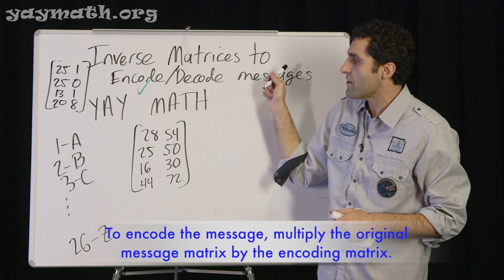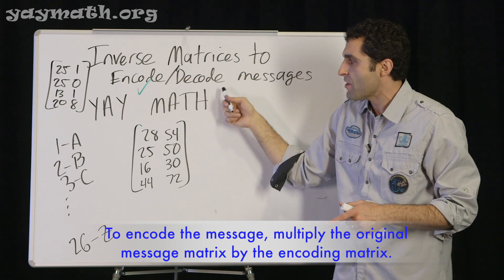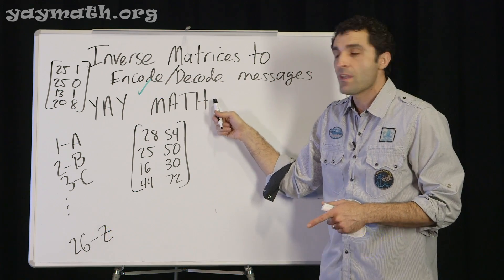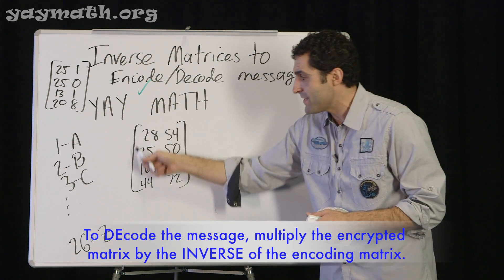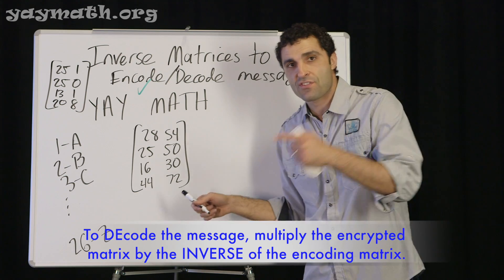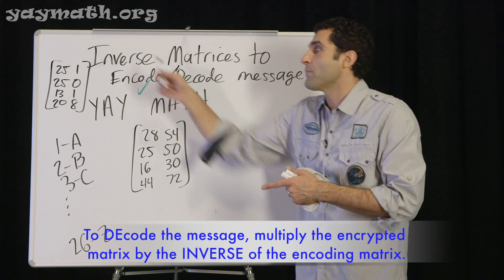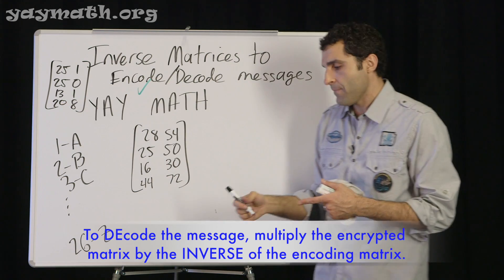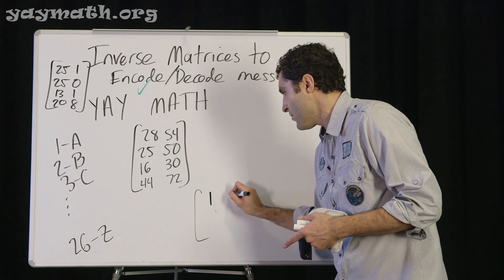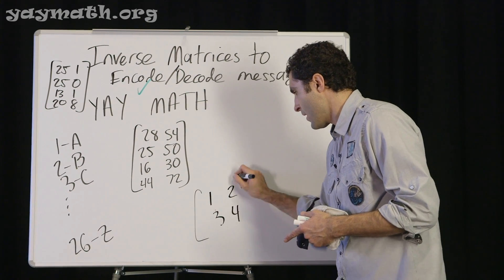To encode the message, we take the original message and multiply it by the encoding matrix 1, 2, 3, 4. To decode the message, we take the coded message, multiply by the inverse of 1, 2, 3, 4, and then we'll get back to this. Let's try it. Let's get the 1, 2, 3, 4, and get the inverse of a 2 by 2.